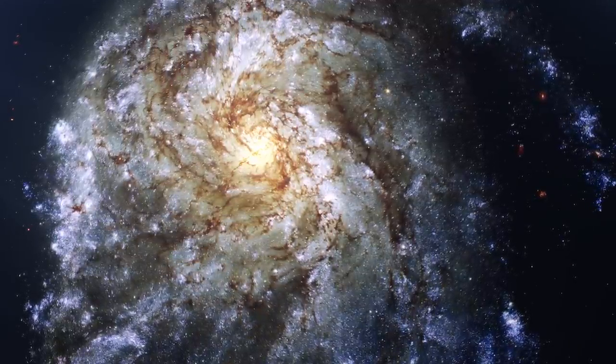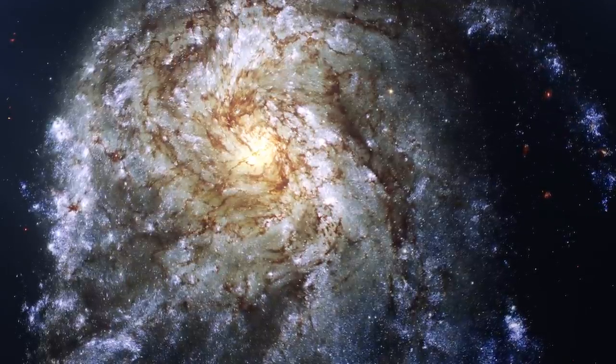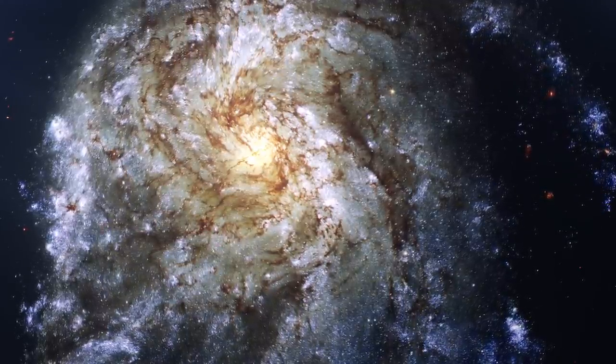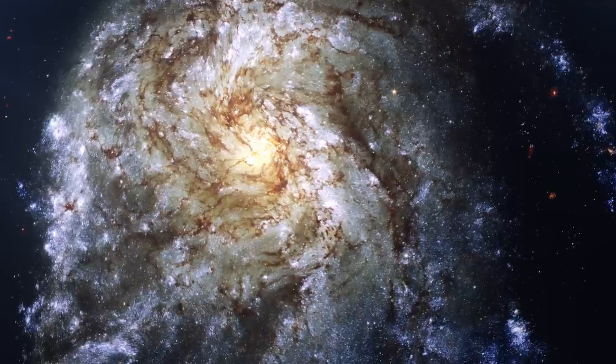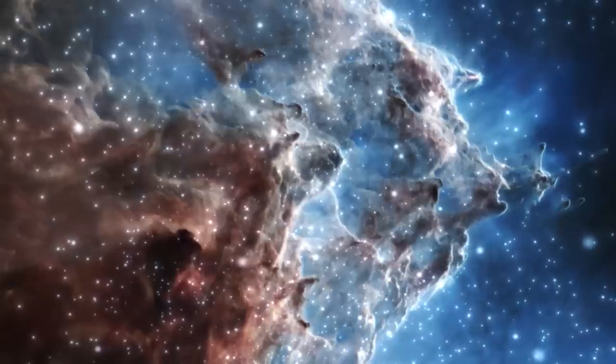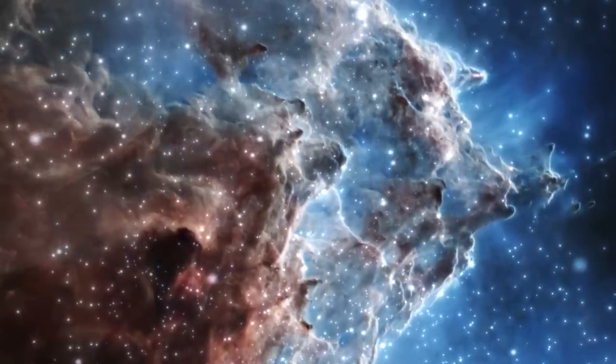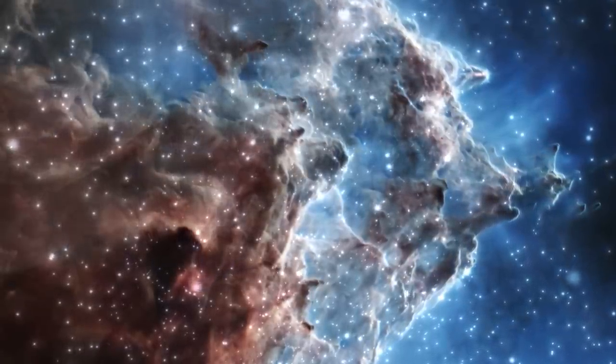About 444 light-years from Earth, in the very old constellation of Taurus, are the Pleiades, or M45, clusters, which form the most beautiful open cluster in the night sky. There are nearly 3,000 stars in this cluster, a dozen of which are visible to the naked eye from Earth in the fall.